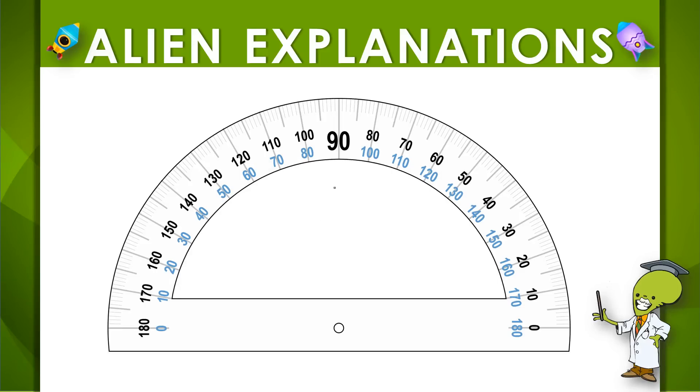Let's review how we measure angles with a protractor. Now this is what a normal protractor looks like. It has two sets of numbers and it's in the shape of a half of a circle.